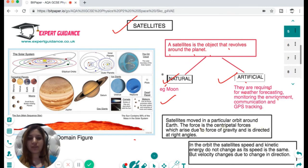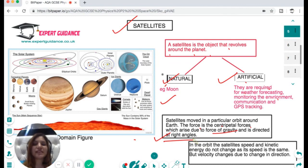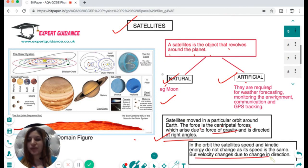Satellites move in a particular orbit around the Earth. The force is a centripetal force which arises due to the force of gravity and is directed at right angle in the orbit. The satellite speed and kinetic energy do not change as its speed is the same, but velocity changes due to the change in direction.